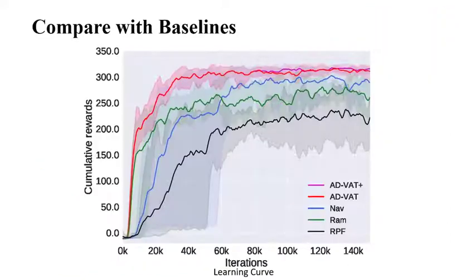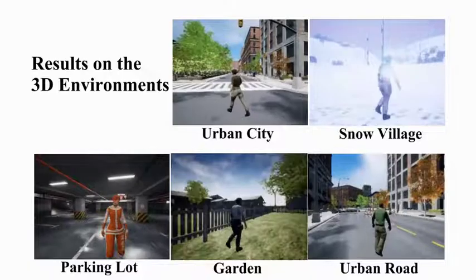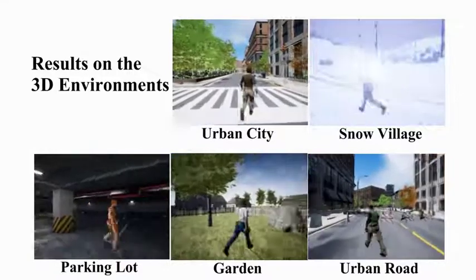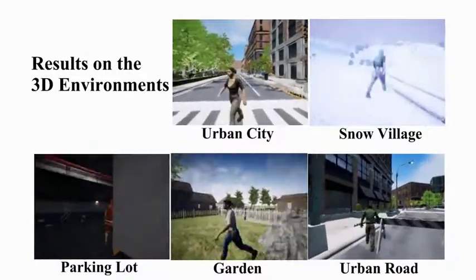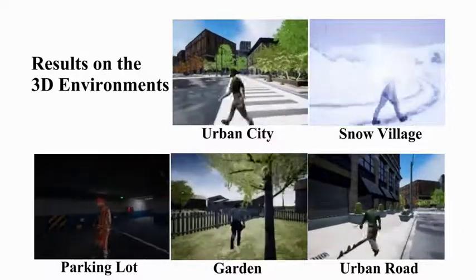We verified the ability of the tracker to migrate to five very different near-realistic scenes, both indoors and outdoors, with very challenging situations such as snowflakes, halo effects, obstacle occlusion, drastic changes in lighting, season, or weather, and appearance of targets.